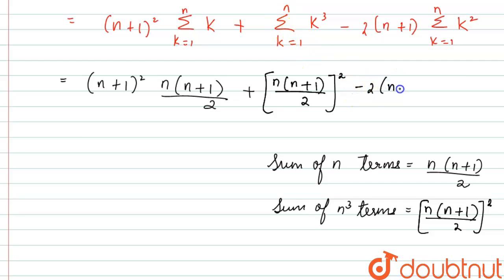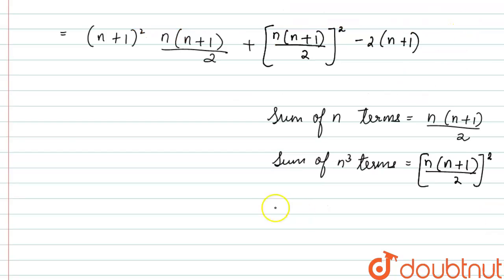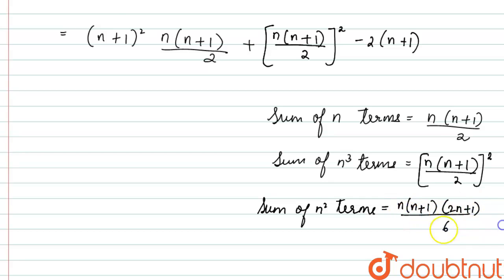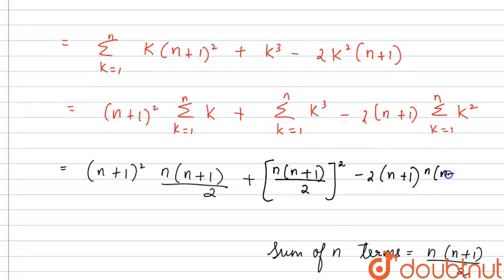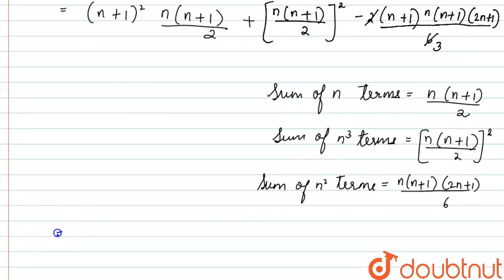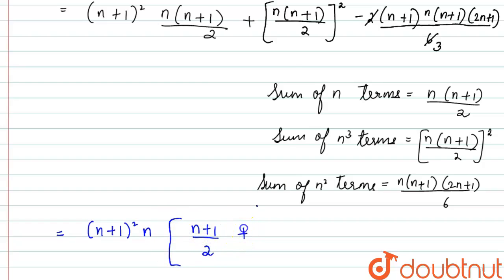Simplifying: 6 and 2 cancel to give 3. Taking n and (n+1)² as common factors from all three terms, the remaining factors are: from the first term (n+1)/2, from the second term n/4 (since [n(n+1)/2]² gives n² so one n remains over 4), and from the third term -(2n+1)/3.